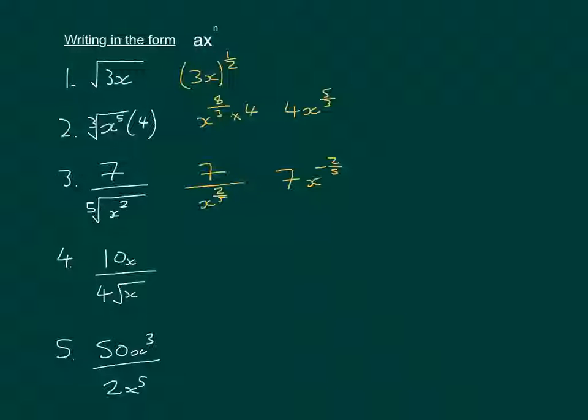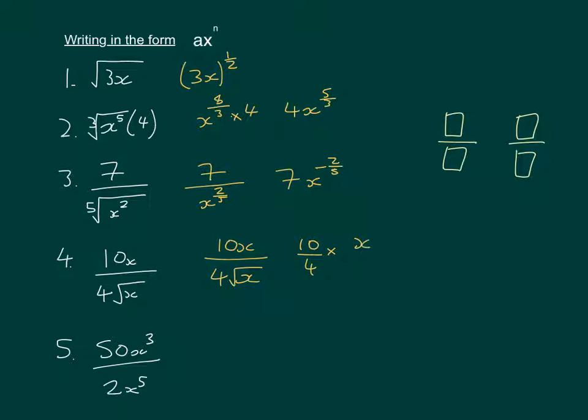Looking at the next one, we've got 10x over 4 root x. Now, a good tip here is you do your fraction and your algebra separately. So that's what we're going to do here. We're going to split up the 10 over 4, and that's multiplying x over root x.